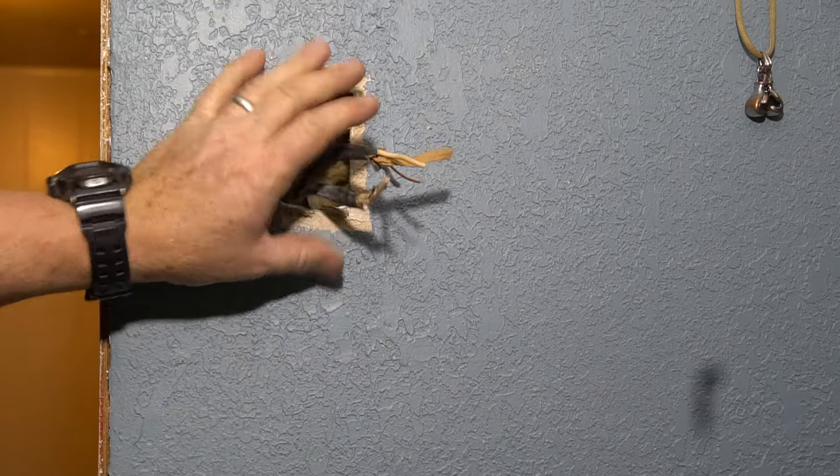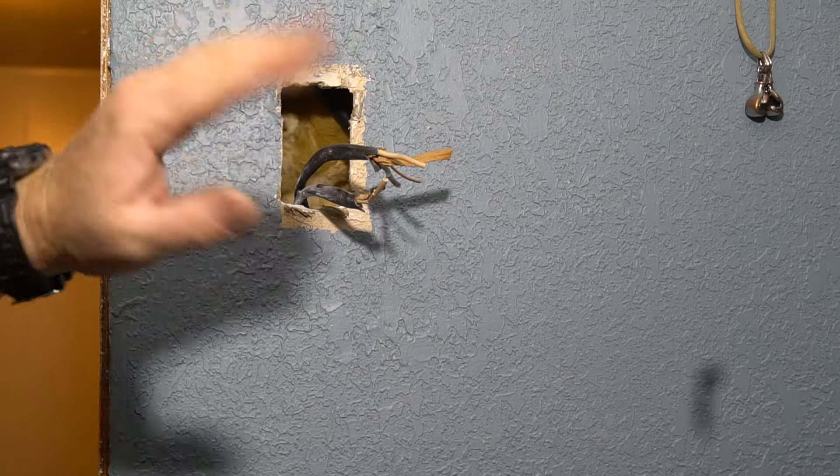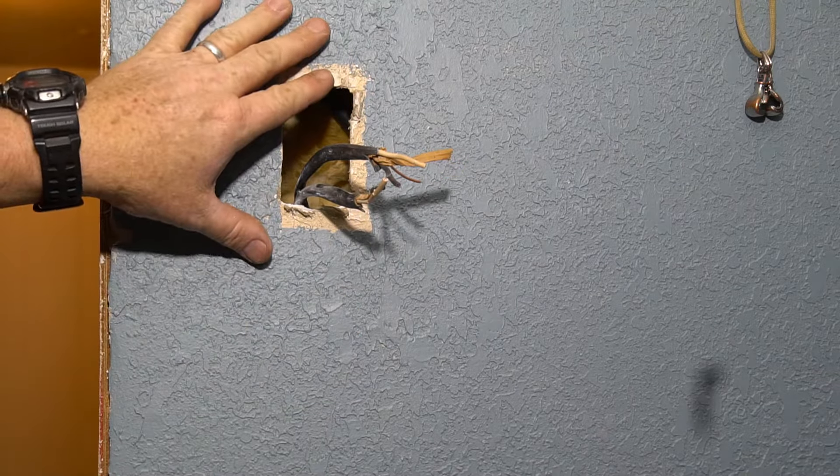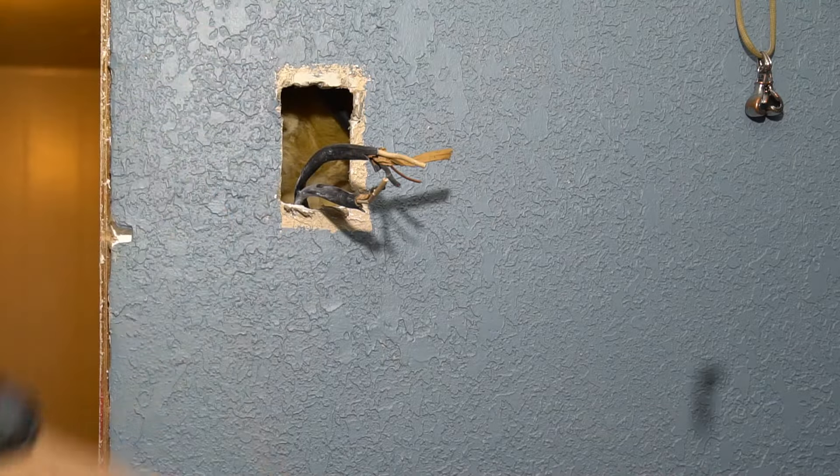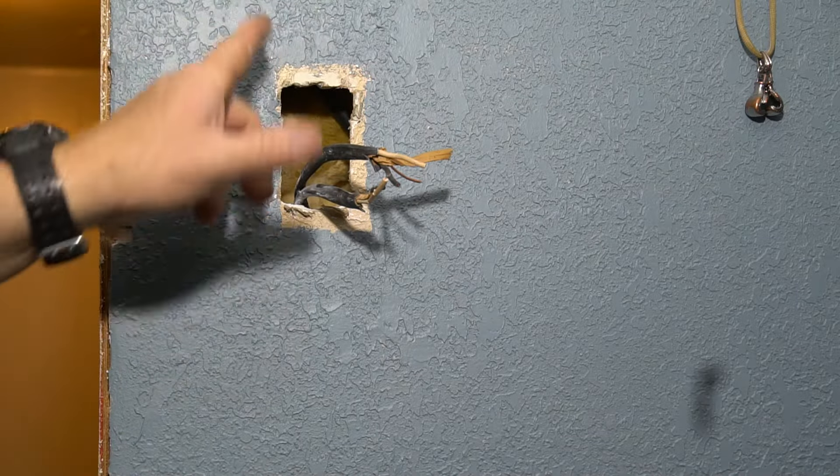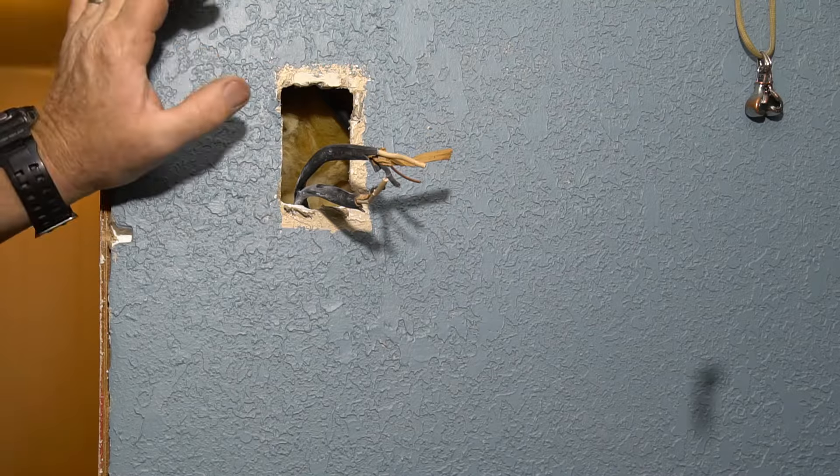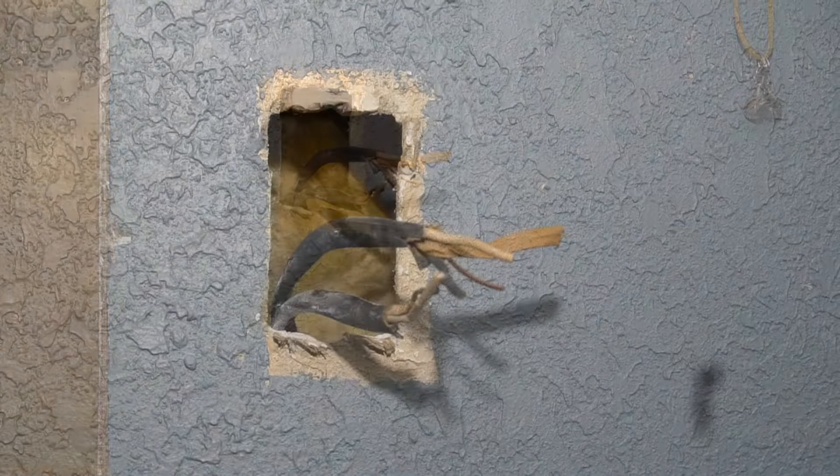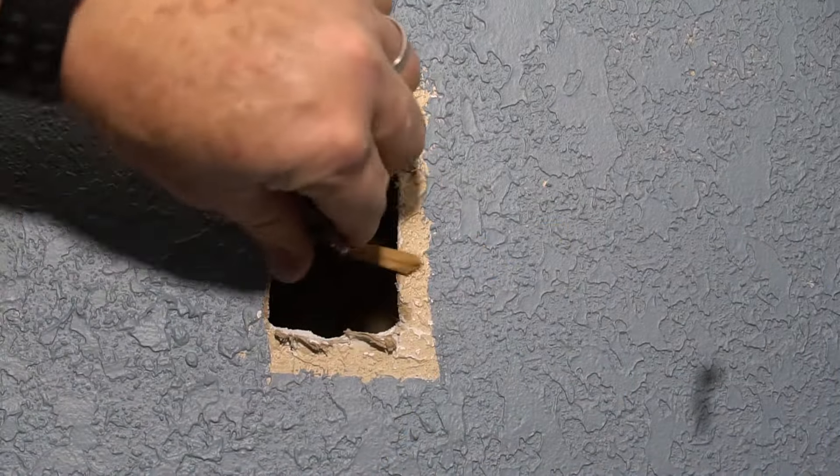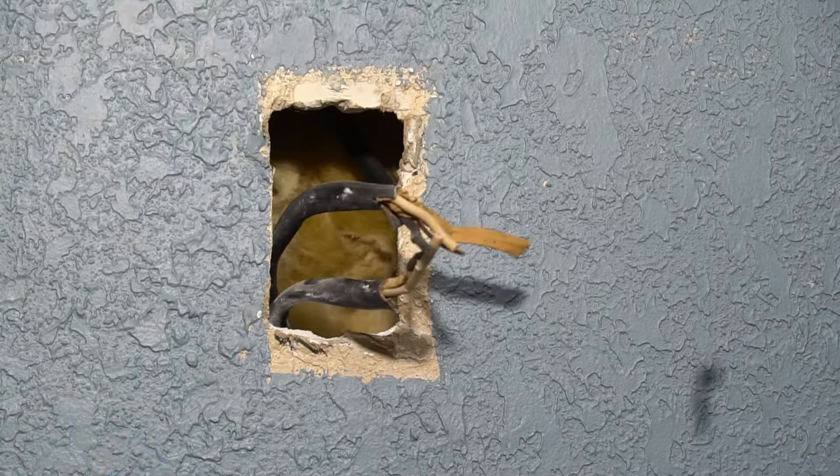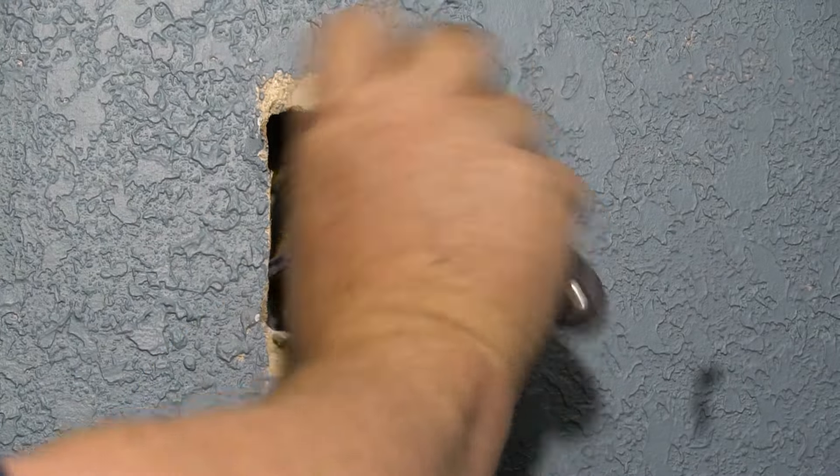So now that we've got that out and cut, we're going to have to put a wall box because you can't just put a switch in there with no box. It needs a box, so we're going to have to cut a hole out to put the box in. To put this box in, the hole isn't going to be quite big enough so I'm just going to push this back in the wall for right now.